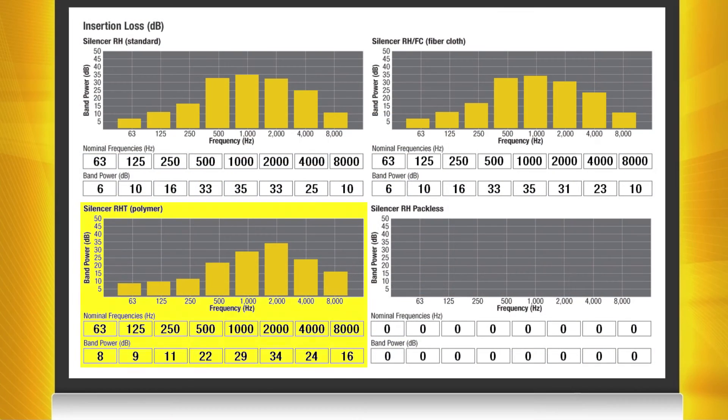You can see that the insertion loss performance of the polymer film lined silencer is less than that of a standard RH silencer. In some cases the film liner is necessary for the application but it's important to note that it does have a negative effect on the acoustical performance of the silencer.